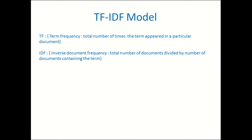Lucene uses the TF-IDF model for calculating the score of a document in relevance to a particular query. It's a very famous model in information retrieval. Term frequency: suppose document number 12 contains the term 'computer' 20 times — so the term frequency for document 12 is 20 for the term 'computer'. IDF: suppose there are 100 documents in total and 'computer' was present in 20 of them — so IDF would be 100 divided by 20 for the term 'computer' across all 100 documents. The score is calculated as TF multiplied by IDF.